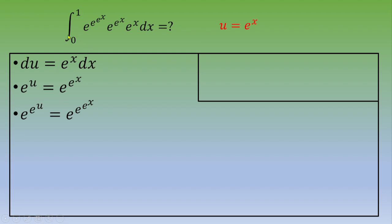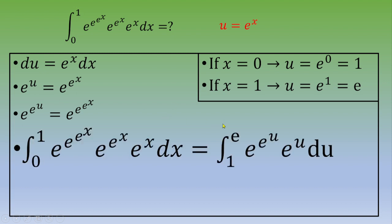Now let's focus on these two limits. If x equals zero, then u equals e to the power zero, which is one. And if x equals one, then u equals e to the first power, which is e.